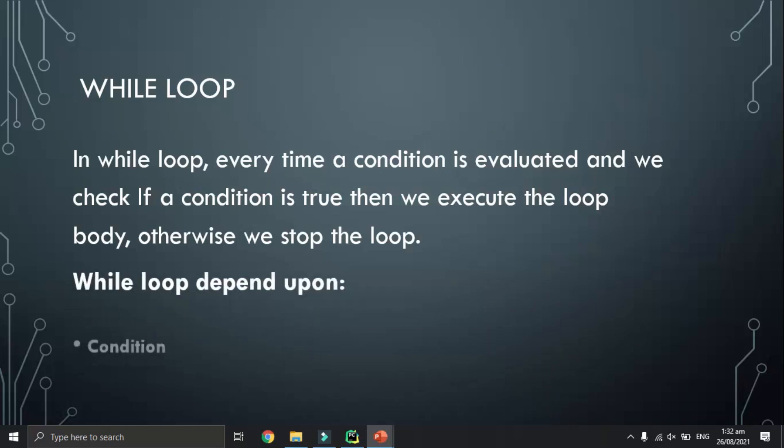A while loop depends on two things. First, the condition: when the condition is true, the while loop will be executed. Second, the variable value: when the condition of the while loop becomes false due to changing of the variable, then we stop the while loop.